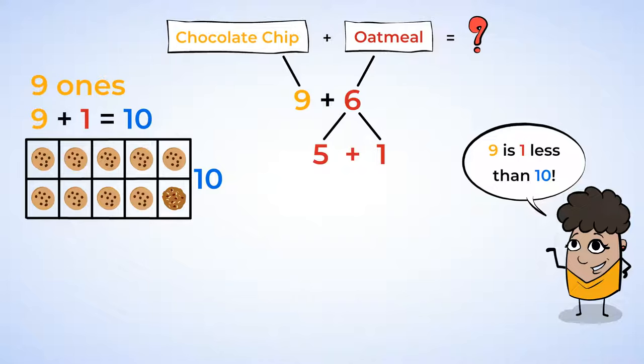Don't worry, you didn't change the number of chocolate chip cookies. You just took one of the oatmeal cookies to make it a 10. So far you have 10 ones.